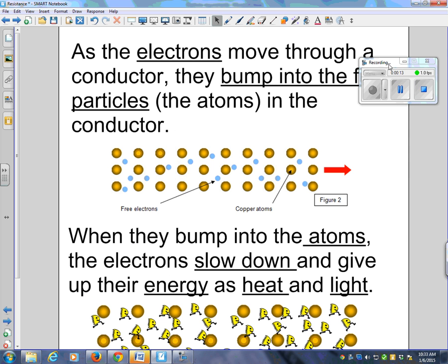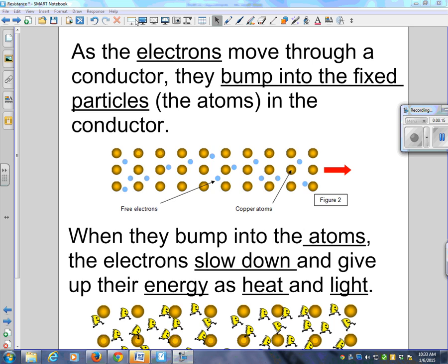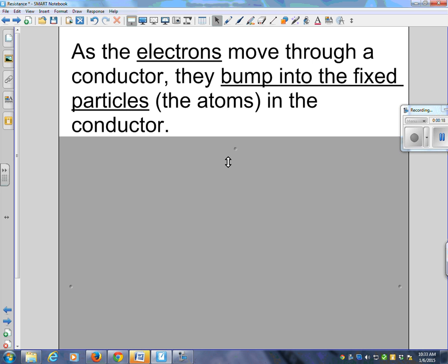As the electrons move through a conductor, what's a conductor again? A conductor is something that allows electrons to flow through things like copper, right? Most metals. As the electrons move through a conductor, they bump into the fixed particles, like in the little video that you watched.